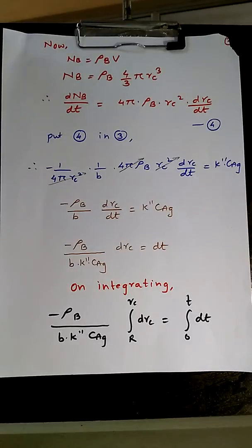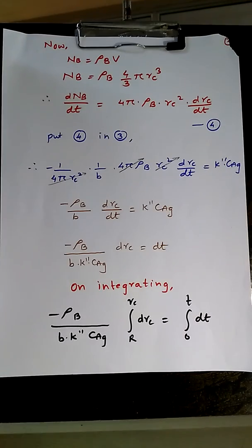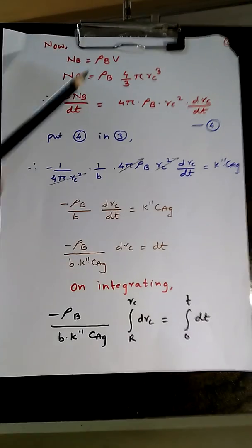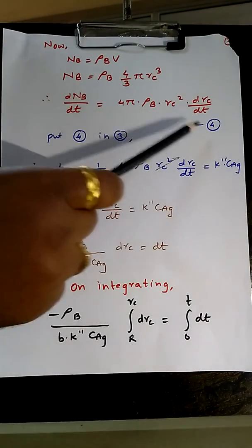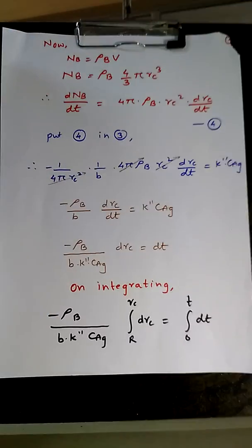So NB is ρB into V. V will be replaced by 4/3 πRc³. Now it will be differentiated to calculate dNB/dt. So dNB/dt will be 4πρB Rc² dRc/dt. That will be due to differentiation of Rc³ with 3, so it will be 3Rc² dRc/dt. So it will cancel out 3. So we have got equation number 4 that we will substitute in equation number 3.